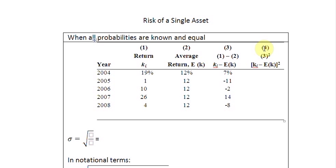The next step is in column number 4, we take the square of the values in column number 3. So 7 squared is 49%, minus 11 squared is 121, minus 2 squared is 4, 14 squared is 196, and minus 8 squared is 64.